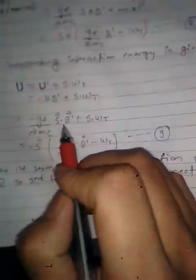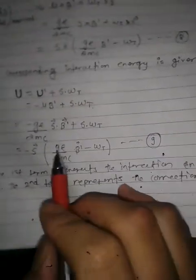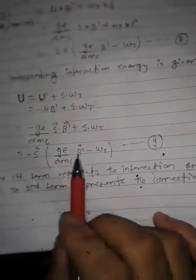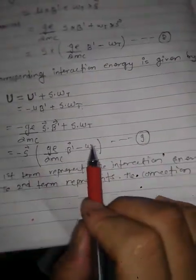The corresponding interaction energy is given by U = −μ · B' + S · ωT. We already have U' = −μ · B'. So the full expression is U = −(g/2mc) S · B' + S · ωT, which can be written as S · [(g/2mc)·B' − ωT]. The first term represents the interaction energy U', and the second term represents the Thomas correction.